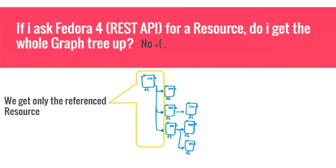If you look at the structure now, on one side you have one thing, and on the other you have a little tree: base resource, MODS description, JP2, TechMD, Thumbnail — each is one resource, and we keep going. So if you want to describe something you have in Fedora 3, it's no longer one resource — it's a graph of resources.